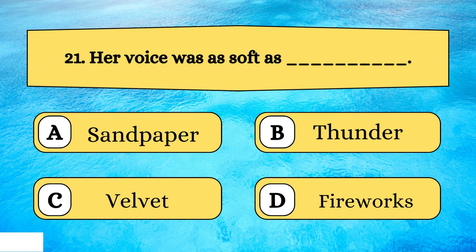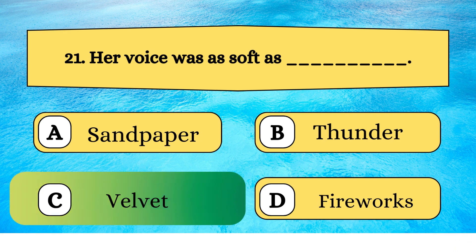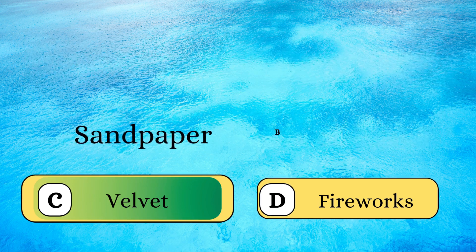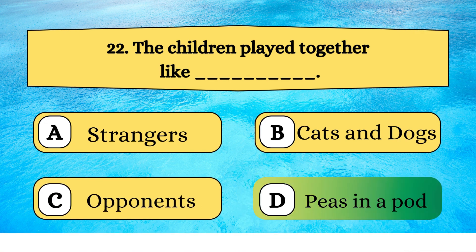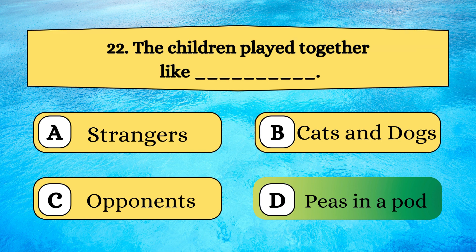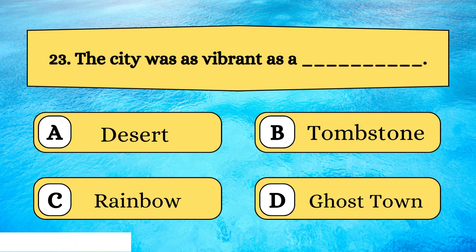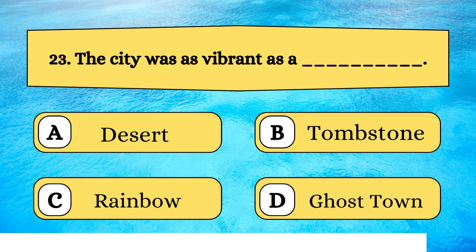Her voice was as soft as velvet. The children played together like peas in a pod. The city was as vibrant as a rainbow.